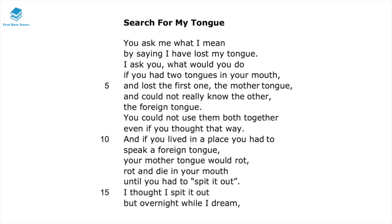I'll read through different verses within this poem and stop every so often to point out important techniques that you should be aware of. The poem begins: 'You ask me what I mean by saying I have lost my tongue. I ask you what would you do if you had two tongues in your mouth and lost the first one, the mother tongue, and could not really know the other, the foreign tongue. You could not use them both together even if you thought that way, and if you lived in a place you had to speak a foreign tongue, your mother tongue would rot and die in your mouth until you had to spit it out.' I thought I spit it out, but overnight while I dream...